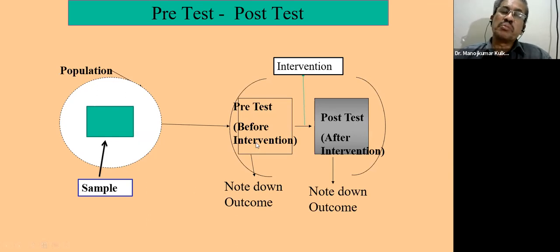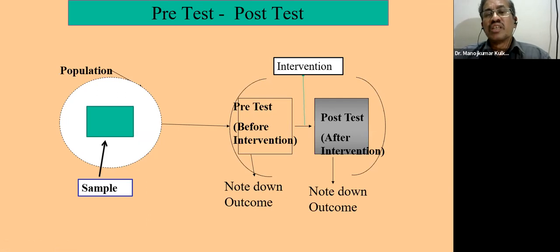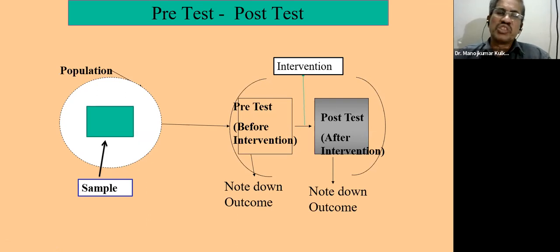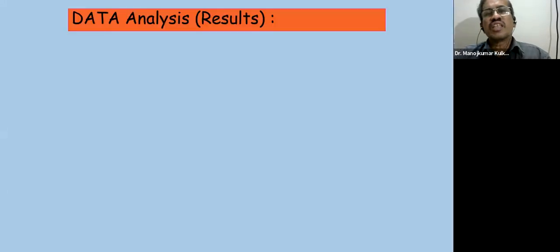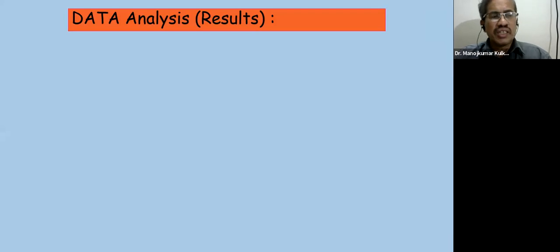These are the various designs available. Based on the objective and resources available, you can choose the study design. Then coming to data analysis — in the results section, we answer the research questions and discuss the hypothesis. This task is achieved through analyzing the collected data, which includes preparing tables, graphs, finding values such as correlation, regression, chi-square test, t-test, and p-values. You may have to reject or not reject the hypothesis based on the sample data.